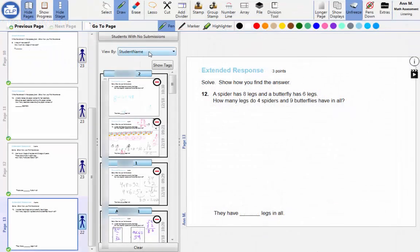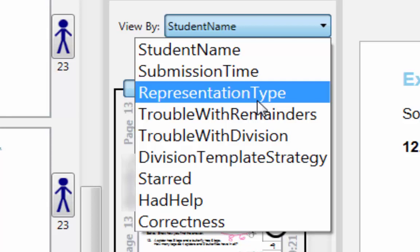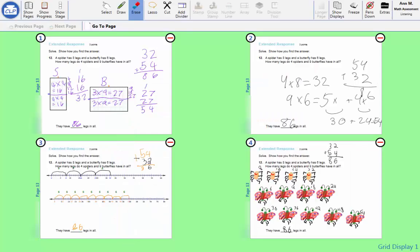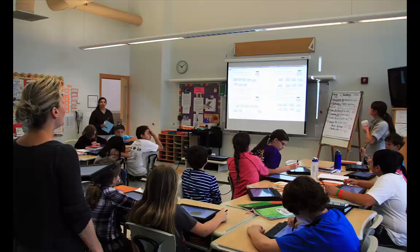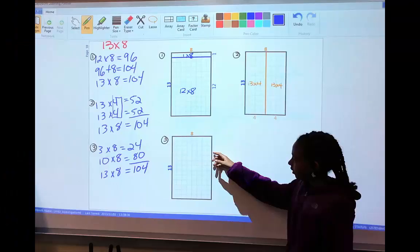Teachers can find students struggling with remainders by sorting by trouble with remainders. They can also sort by the representation type students use to solve a problem: arrays, number lines, or stamps in this example. The ability to sort student work helps teachers choose examples so that students can see and discuss a variety of problem-solving strategies.